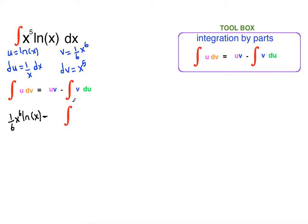v is 1 sixth. We can pull it to the front. x to the sixth times 1 over x dx.